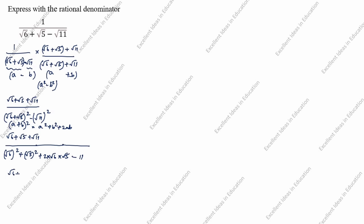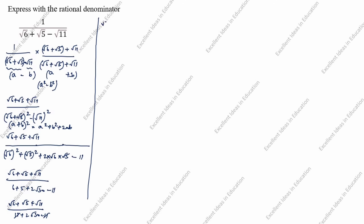Next: root 6 plus root 5 plus root 11 divided by root 6 square is 6, plus root 5 square is 5, plus 2 root 6 into root 5 is 2 root 30, minus 11. Simplifying the denominator: 6 plus 5 minus 11 gives 0, leaving 2 root 30.